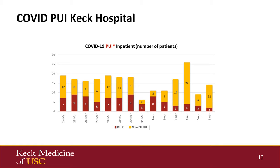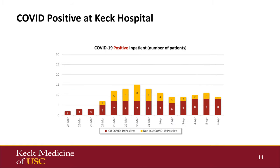Looking at Keck Hospital, these numbers are current as of April 6th and represent people under investigation. On average, we've had 15 to 20 cases per day. You can see the distribution of patients in the ICU versus not in the ICU. The number of positive patients at Keck on average is around 10, and about 80% of them are in the ICU.